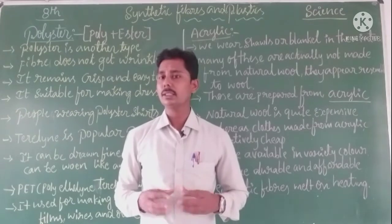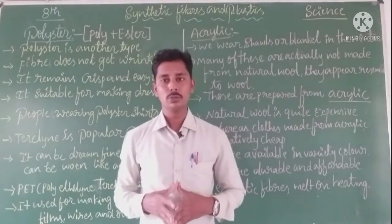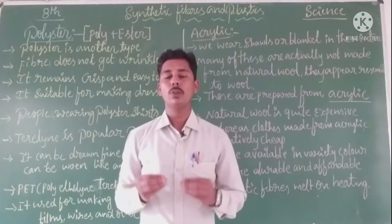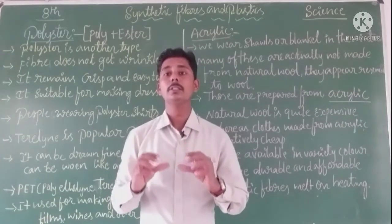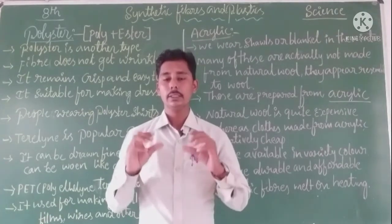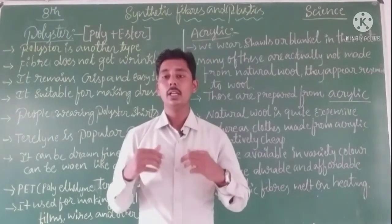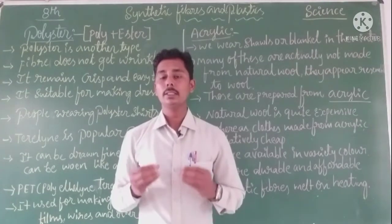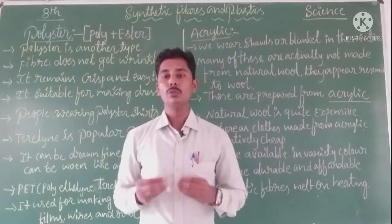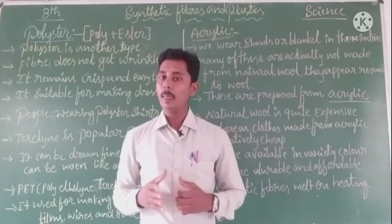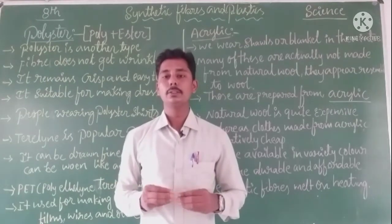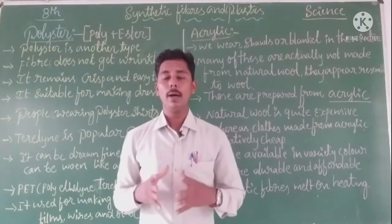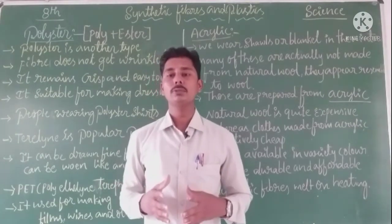Synthetic fiber is made from artificial sources. It is made by small units which join together to form a large unit. These small units are made by chemical substances, and the large unit formed is called a polymer. The word polymer comes from two Greek words: 'poly' meaning many, and 'mer' meaning unit or parts — which means many repeating units.